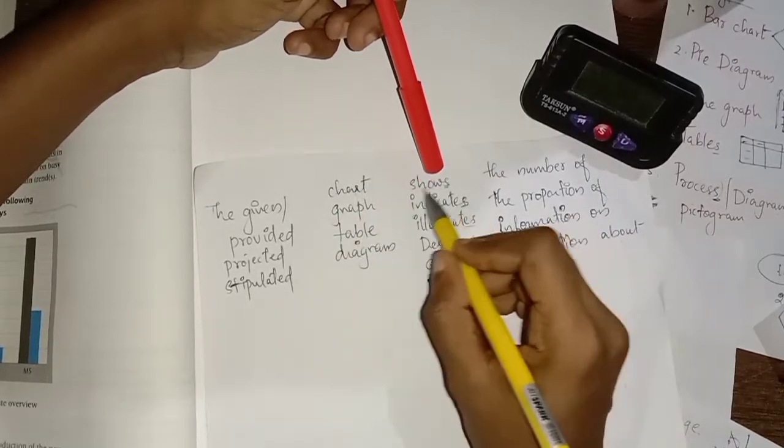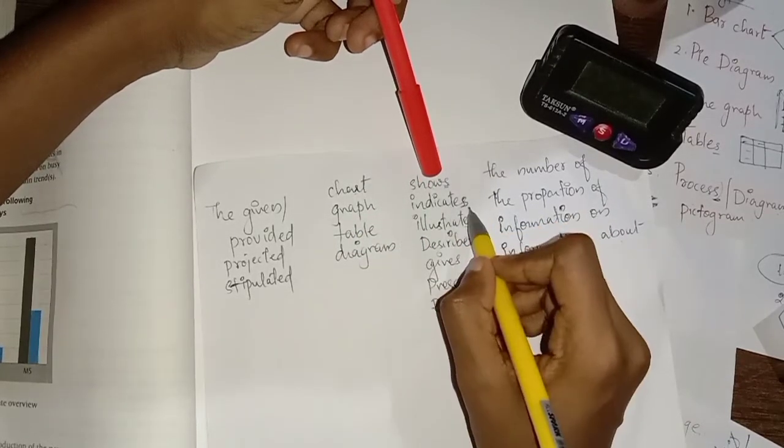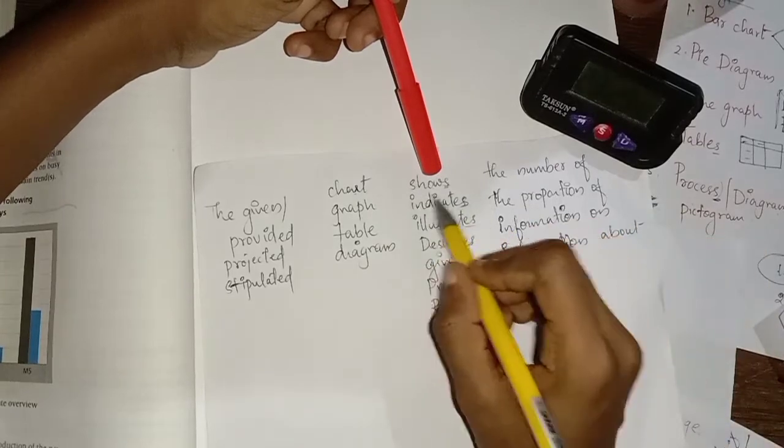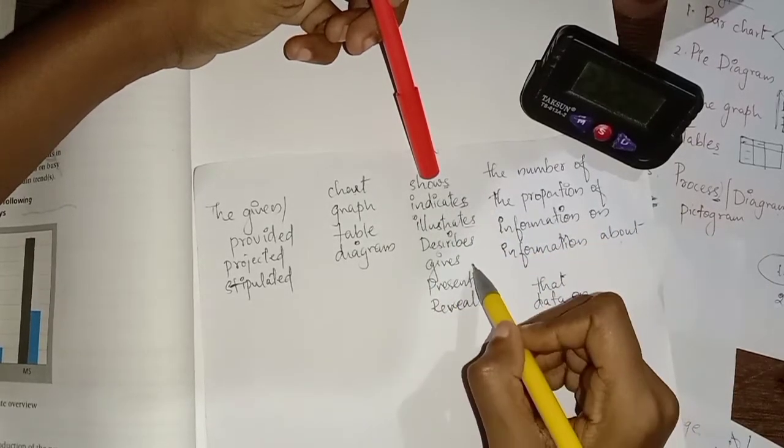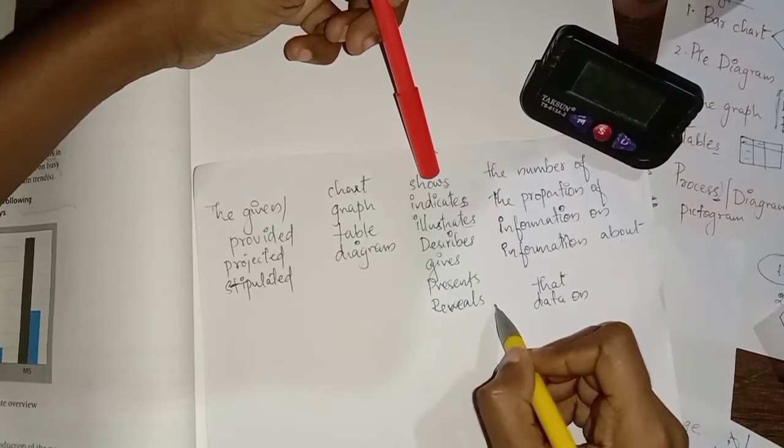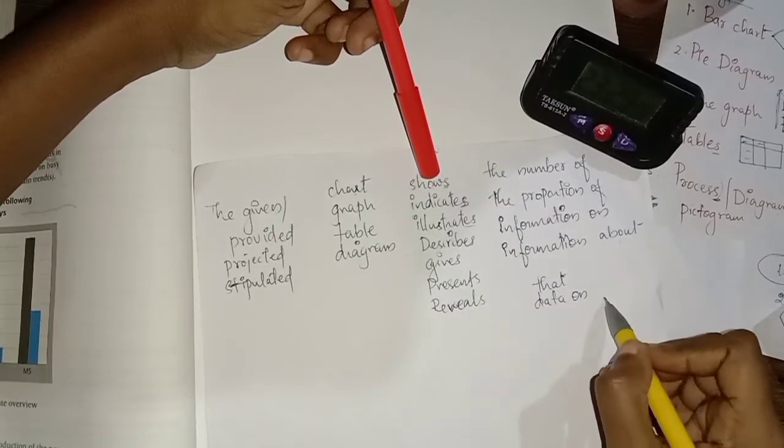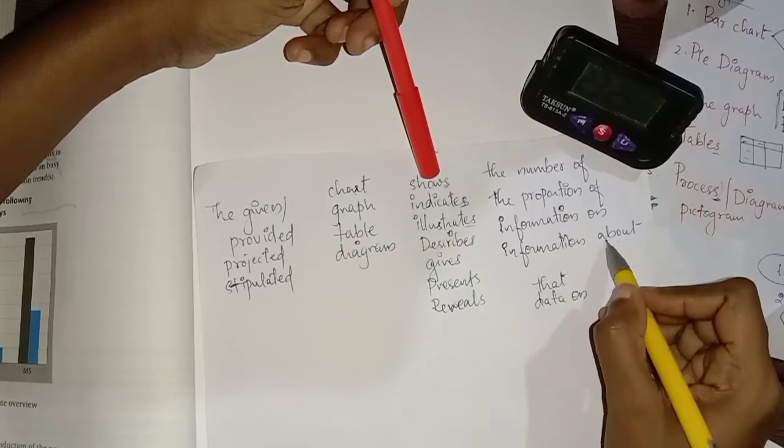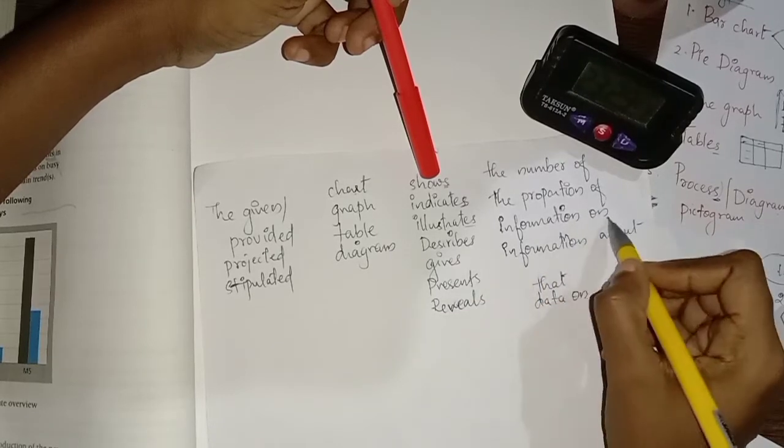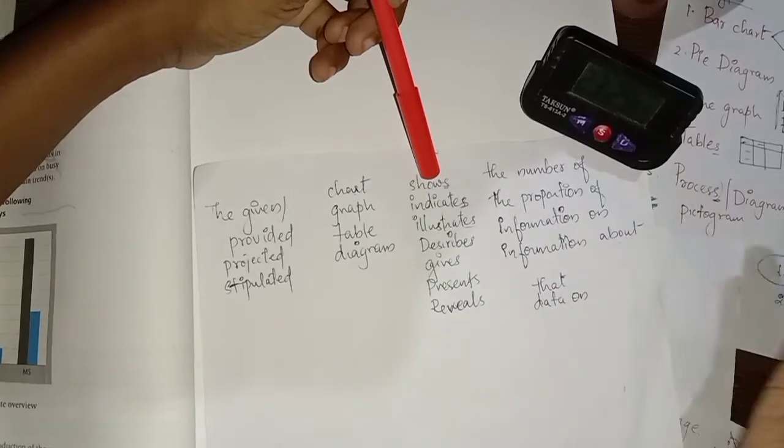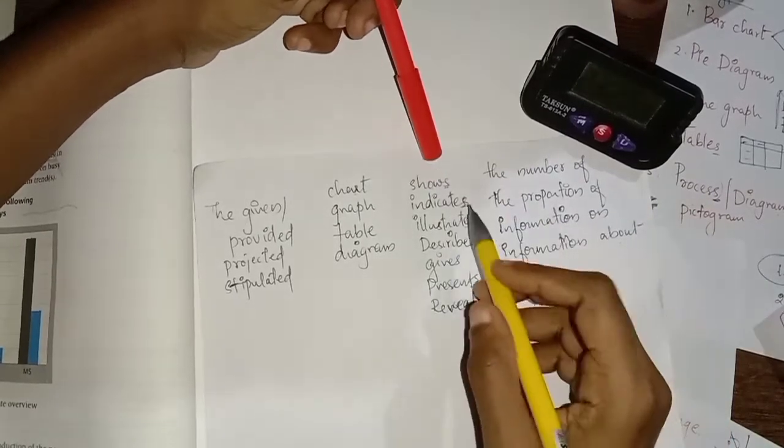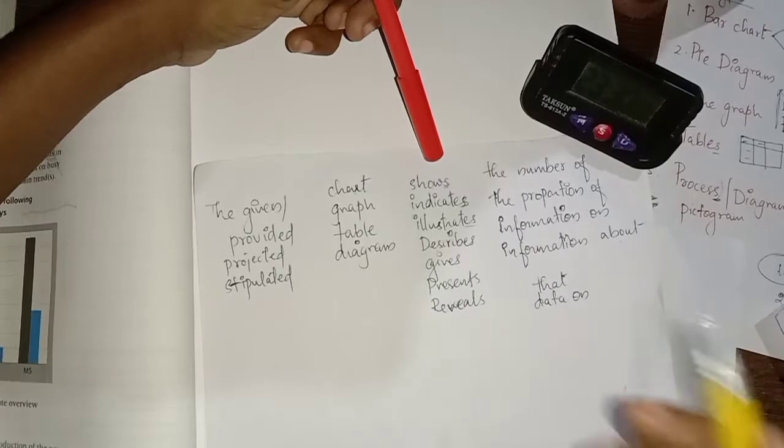Graph indicates, indicates, illustrates, describes, gives, presents, reveals - reveals data on, reveals information about, or gives information on, or illustrates the proportion of people or whatever it is. So this is the exact way to write the introduction.